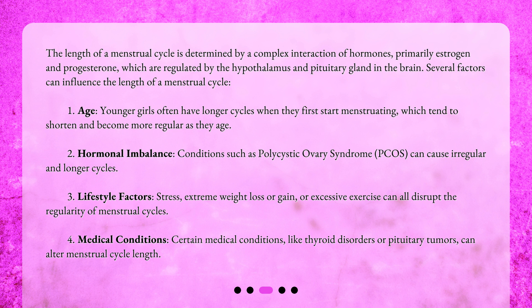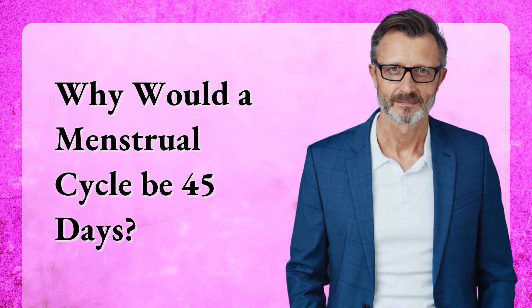Three: lifestyle factors — stress, extreme weight loss or gain, or excessive exercise can all disrupt the regularity of menstrual cycles. Four: medical conditions — certain medical conditions like thyroid disorders or pituitary tumors can alter menstrual cycle length.